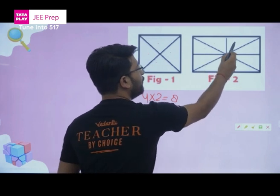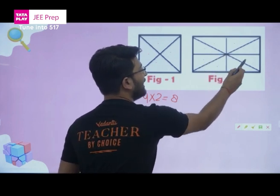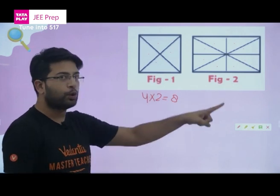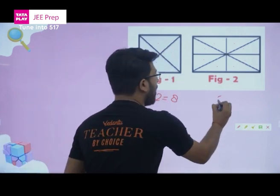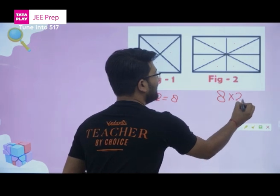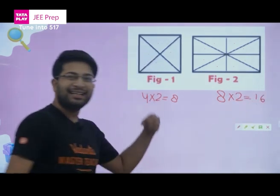There are one, two, three, four, five, six, seven, eight—total eight blocks by two diagonals. The number of triangles will be eight into two is sixteen. Remember this trick.